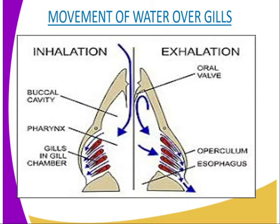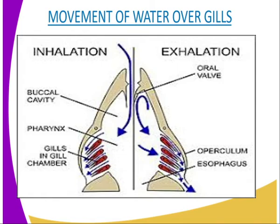Due to this difference, oxygen diffuses from the water flowing over the gills into the blood through the thin walls of the blood capillaries. The oxygen absorbed then combines with hemoglobin in the blood of the fish and is transported to all parts of the body. On the other hand, the carbon dioxide concentration in the blood capillaries of the gill filaments is higher than that in water, causing carbon dioxide to diffuse out of the blood into the flowing water through the walls of the blood capillaries. To facilitate maximum gaseous exchange, a steep concentration gradient must be maintained, achieved by water and blood flowing in opposite directions — a scenario known as the counter-current flow system.